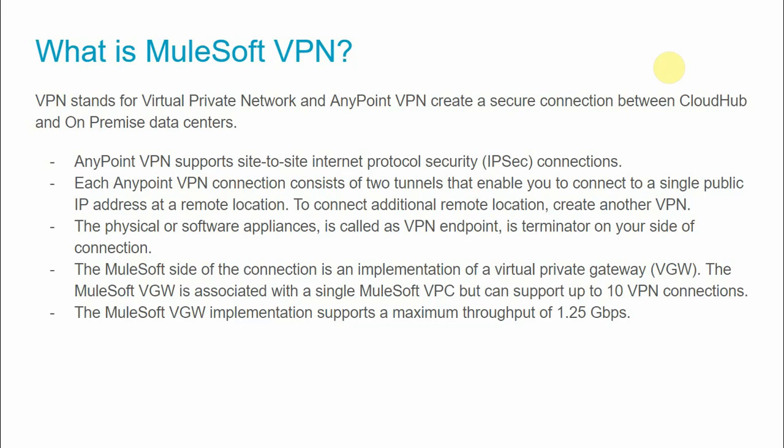You have one VPN device on your on-premise data center, and each VPN device has a remote IP address. From CloudHub we connect to that remote IP address — that is the VPN endpoint. In some cases you may need to connect to multiple VPN devices, so you create multiple VPNs to connect to those multiple devices. The physical or software appliance is called the VPN endpoint, which is the terminator on your side. The MuleSoft side of the connection is an implementation of a Virtual Private Gateway (VGW), which is associated with a single VPC.